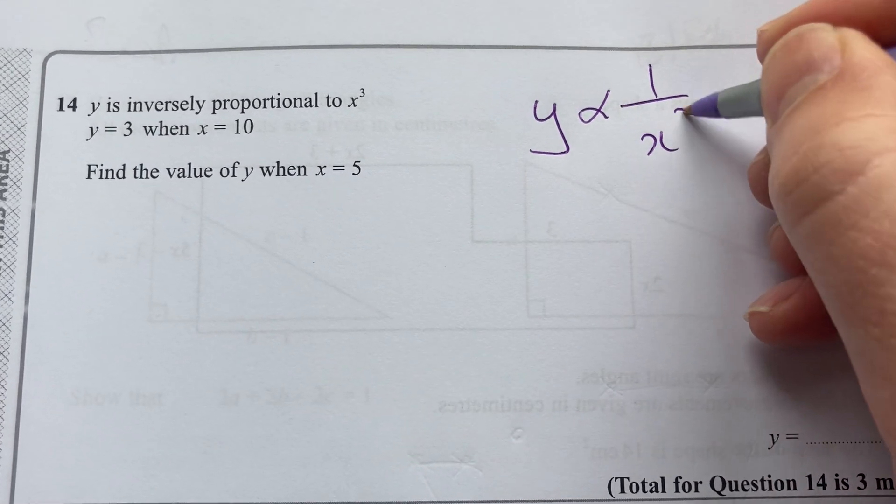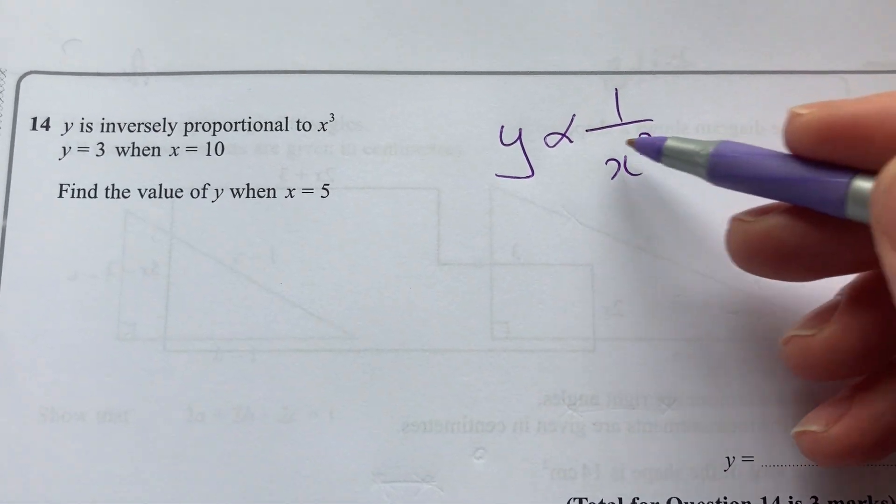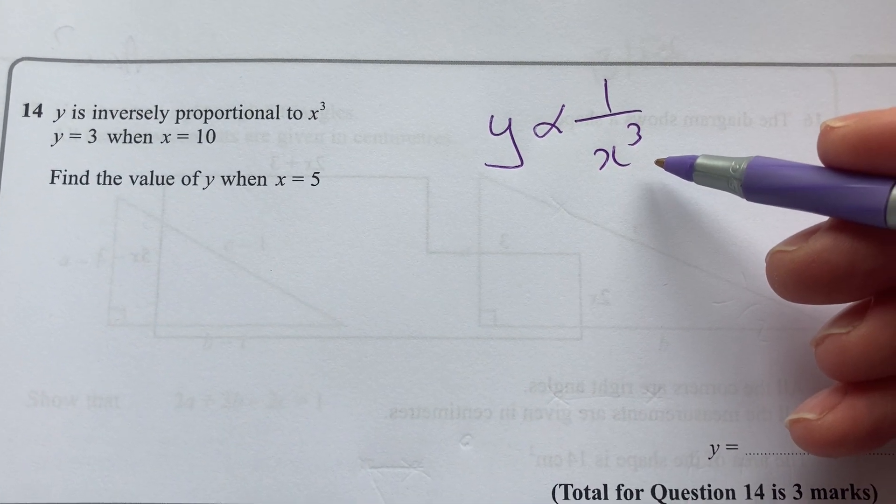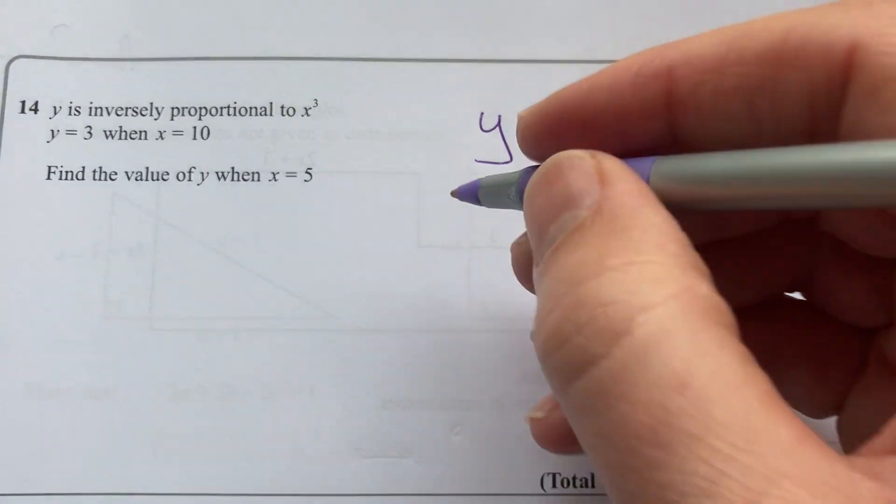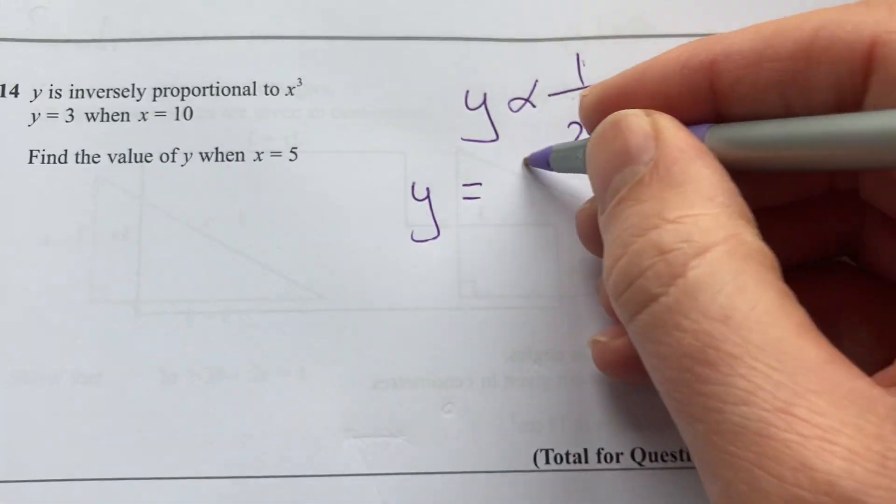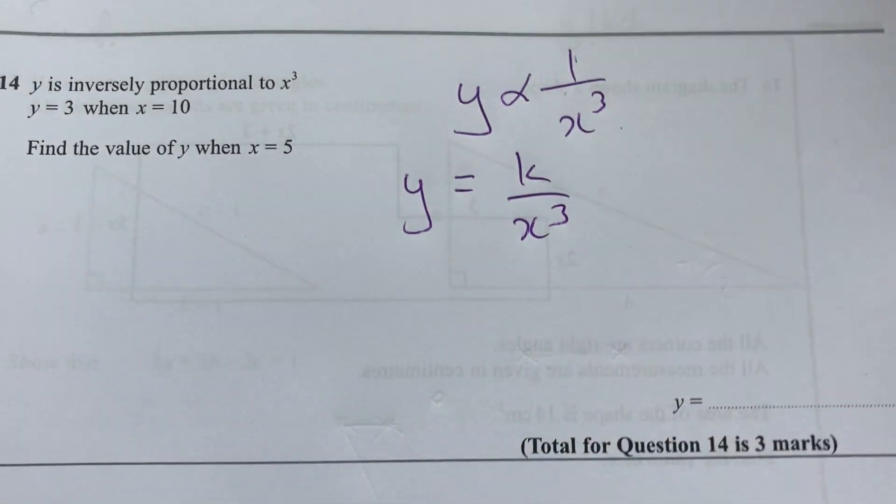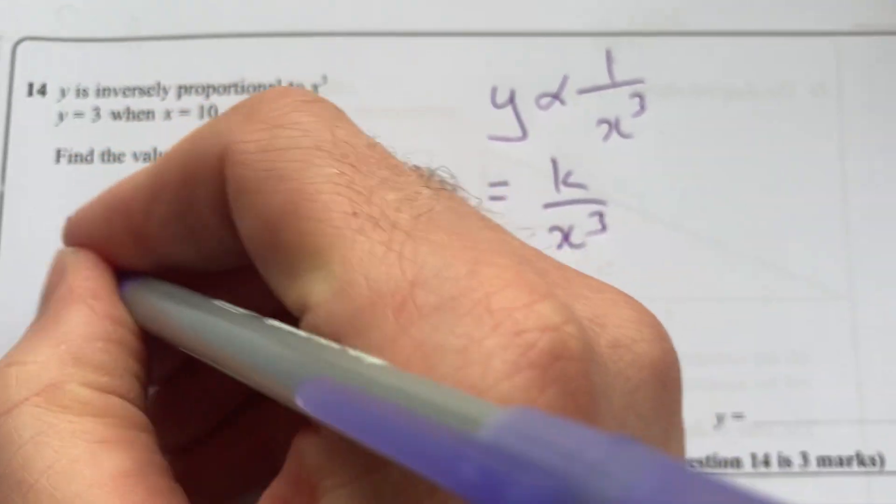So some relationship between y and x cubed, but it's inverse, so it's reciprocal. So I'm going to say let's put some value k there. Now they tell us that when y is 3, or sorry, when x is 10, y is 3.